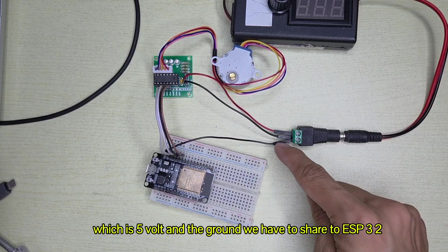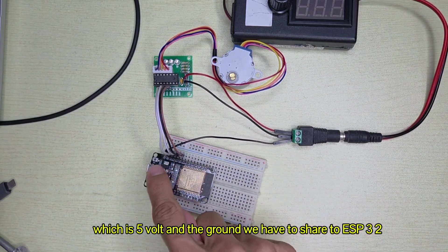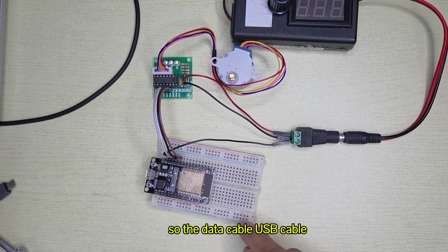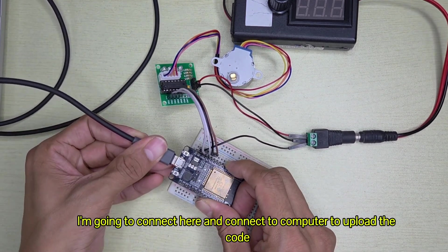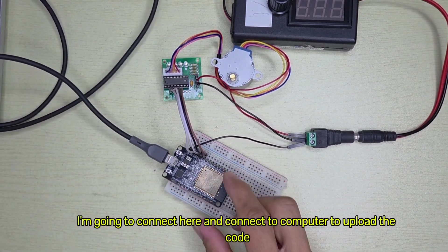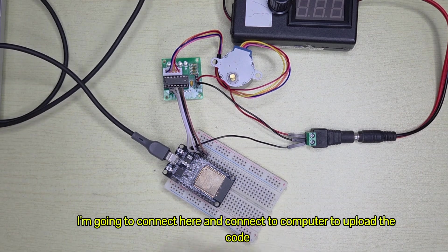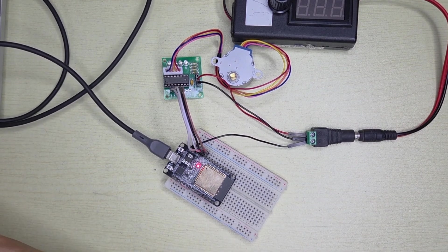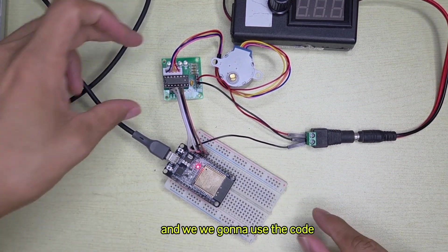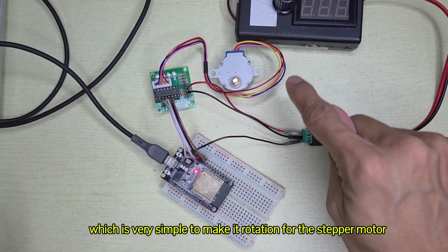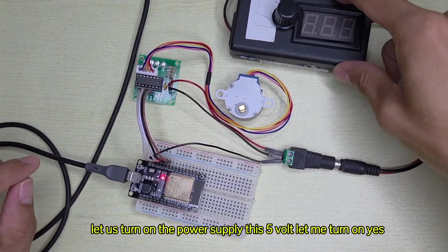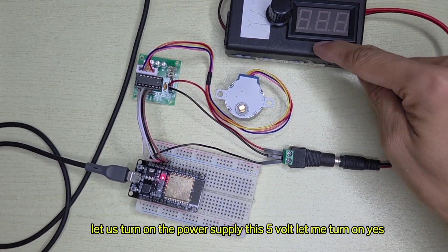The power we give separately from outside power supply which is 5 volt, and the ground we have to share to ESP32. The data cable USB cable I'm going to connect here and connect to computer to upload the code. We're going to use code which is very simple to make rotation for the stepper motor.